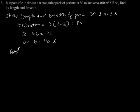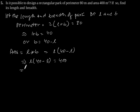Now, area will be L × B. Putting B = 40 - L, we get L(40 - L). It is given that area is 400. So, L(40 - L) = 400. This implies 40L - L² = 400. Therefore, L² - 40L + 400 = 0.